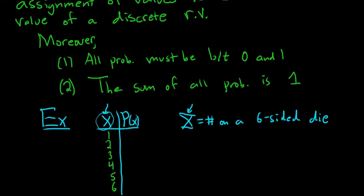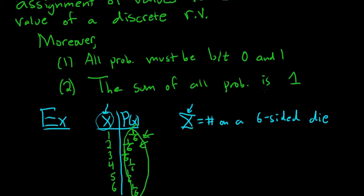The probabilities of each value: the probability of rolling a one is 1/6, since there's one way to roll a one and six ways to roll the die. Likewise, it's 1/6 for two, three, four, five, and six — they're all 1/6. These are all between 0 and 1, and if you add them all up — six times 1/6 — you get 1. So this is a probability distribution.